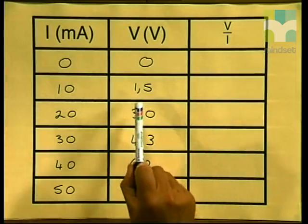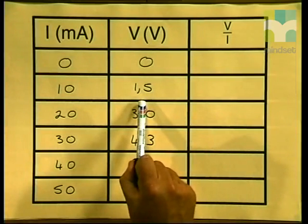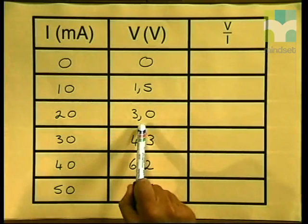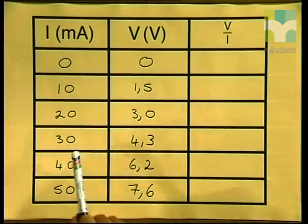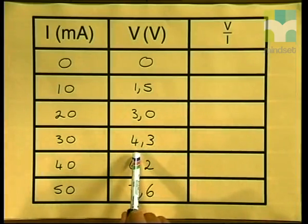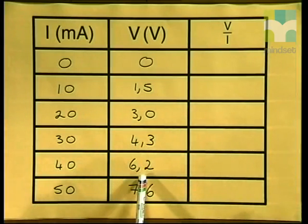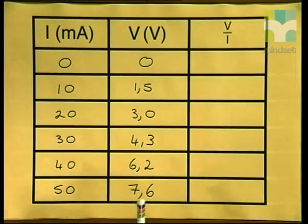I'm sure you all saw how those readings were taken. Now I'm going to go to my table and show you the readings I actually collected. My first reading of 10 mA, I recorded 1.5 volts. My next reading of 20 mA, I obtained 3.0 volts. 30 mA gave me 4.3 volts. 40 mA gave me 6.2 volts. And my last reading of 50 mA gave me a reading of 7.6 volts.